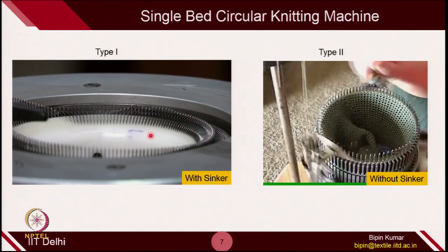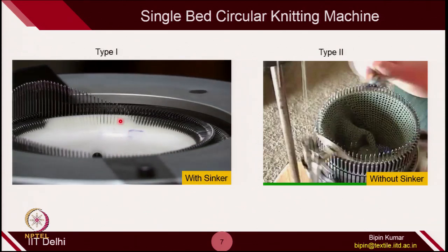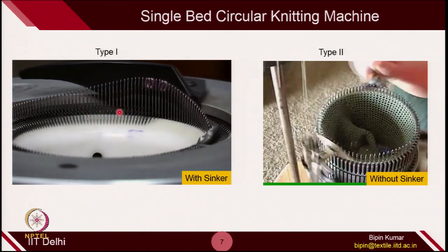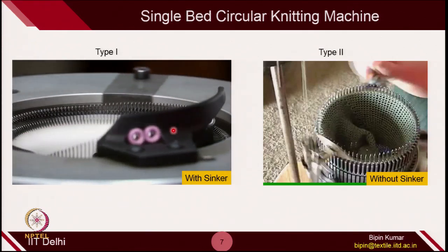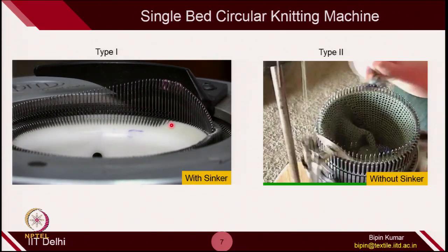There is a small video of two running machines simultaneously — one with sinker and one without. In the sinker machine, you can see something going inside and coming out — that is the sinker part. In the vertical direction, the needle is doing the actions. In the other machine in circular knitting, which is without sinker, only the needle is going up and down and the cam is doing its role. In the sinker machine, similar to the needle going up and down, the sinker also does reciprocative movements perpendicular to the needle direction. That is the fundamental difference between with-sinker and without-sinker machines.